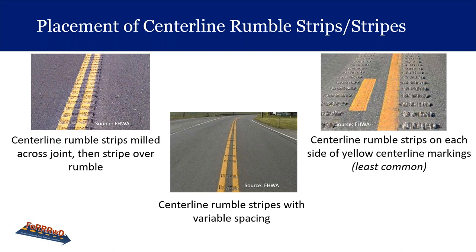There are different ways to place centerline rumble strips and stripes. In the top left, centerline rumble strips milled across the joint, then striped over the rumble. If there are concerns about the joint or desire for more separation, rumbles can be installed on each side of the centerline. Some states use a variation leaving out every third rumble, which may produce a different sound and be less aggressive. Since it's on the centerline, it's the driver who will feel the jolt more than the passenger.